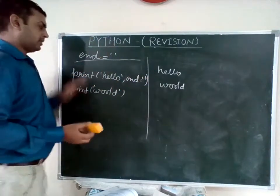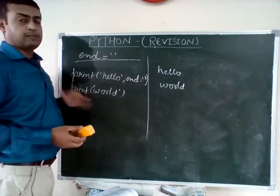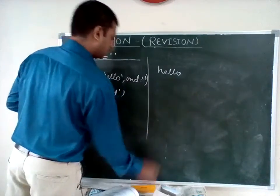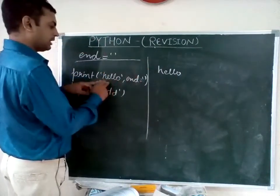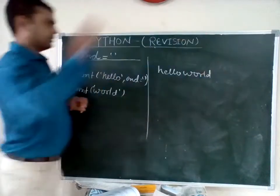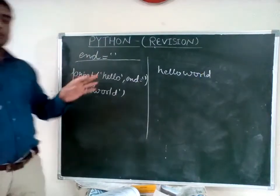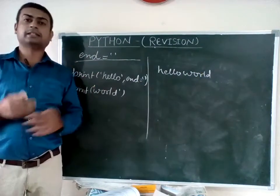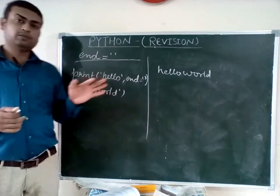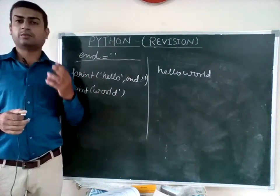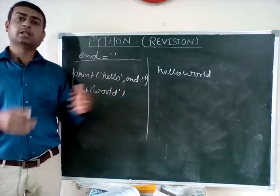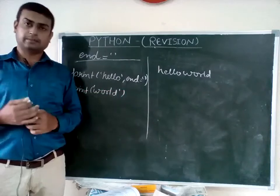It will give you the output in a single line — hello, and then word will come. So the end function removes the line change command. If you have more than two print functions and you don't want to change the line, you will use the end function to remove the line change statement.